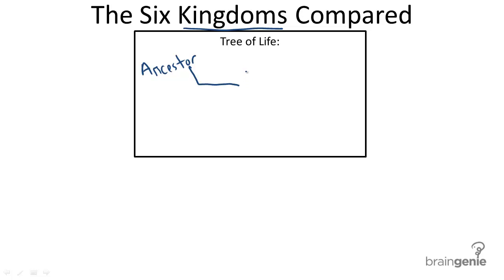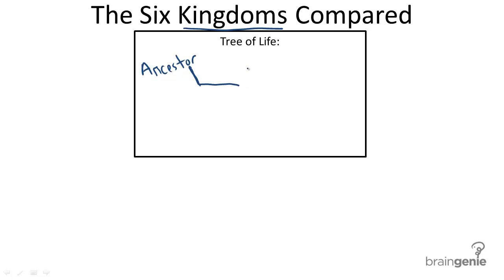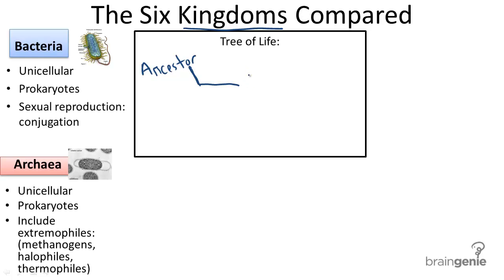Branching off of the ancestral genetic tree are unicellular organisms called bacteria. These are prokaryotic organisms, which reproduce by binary fission. We'll go through them in more depth in another video.